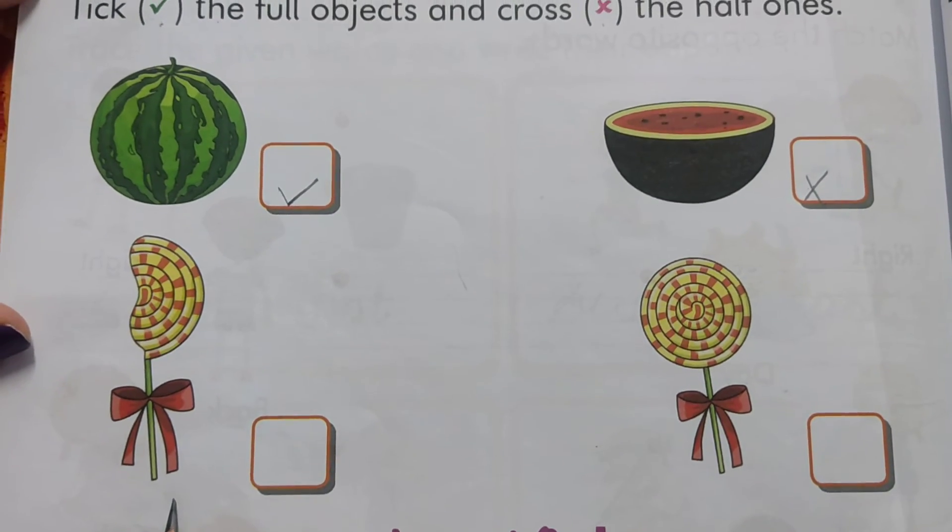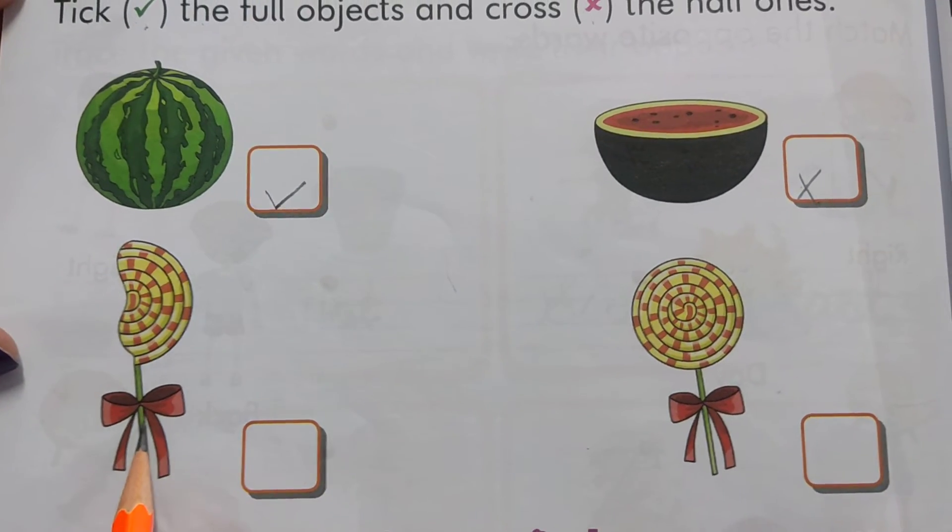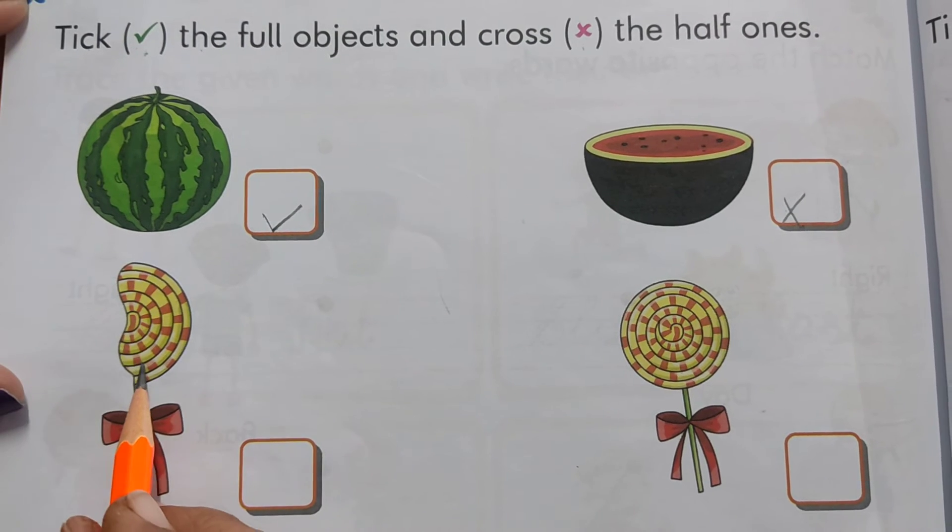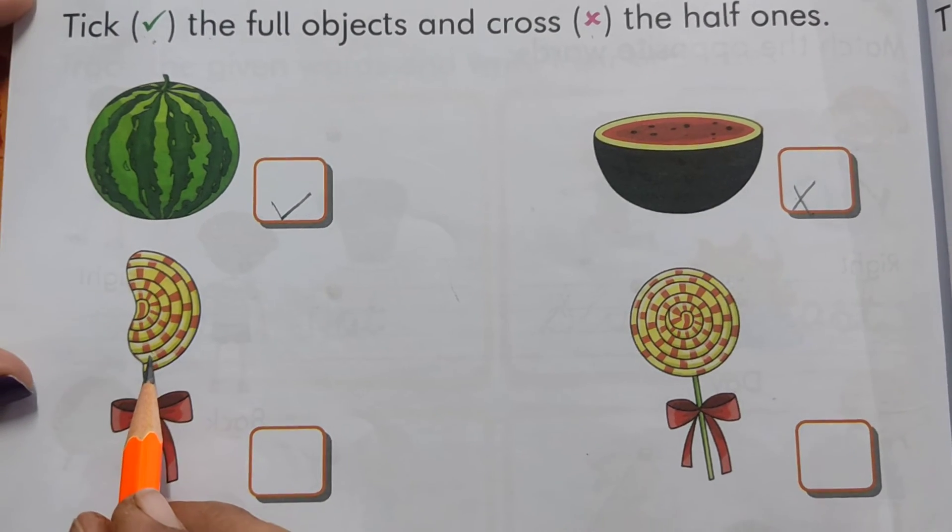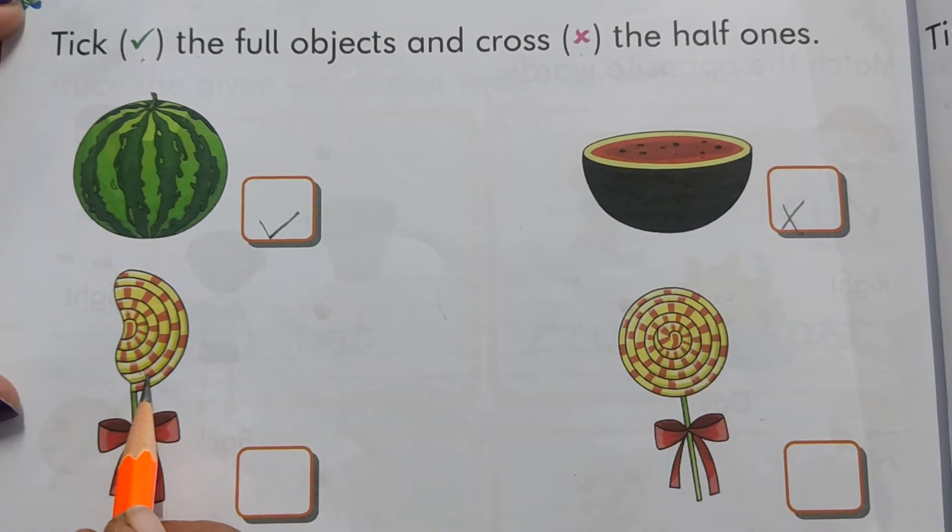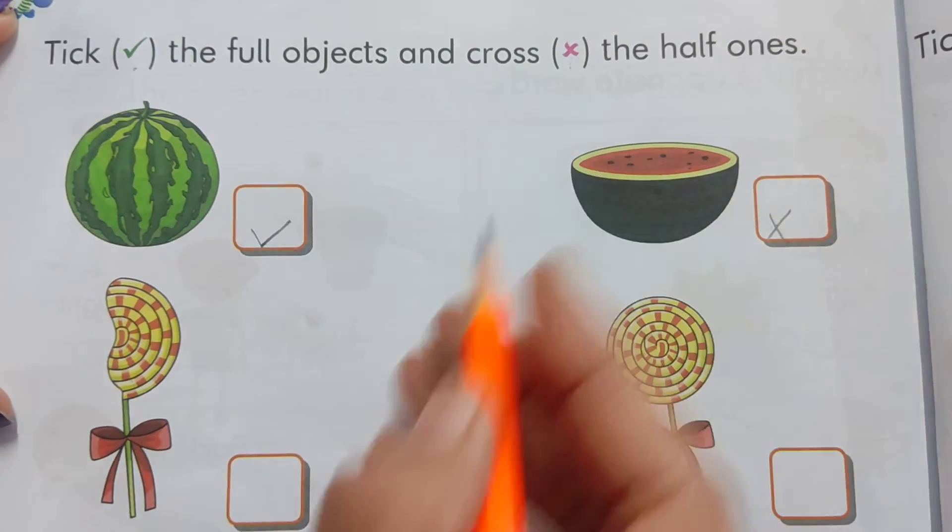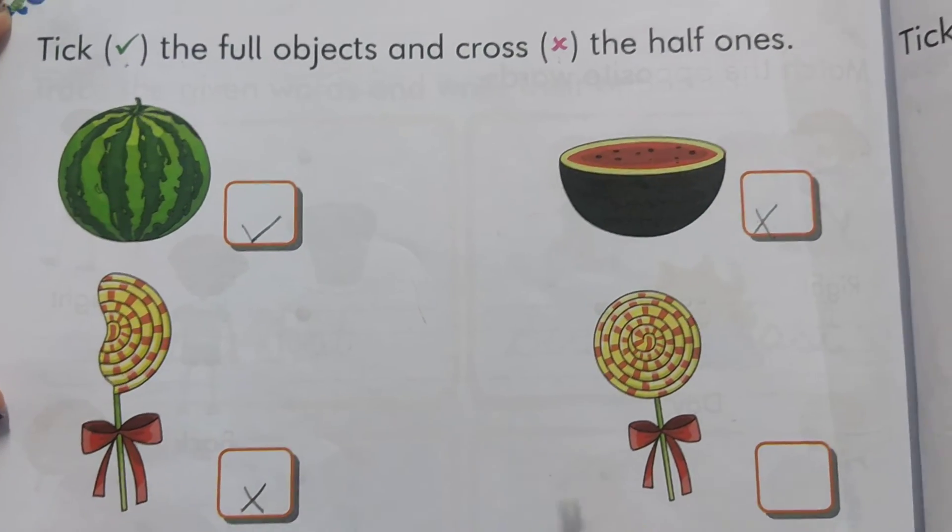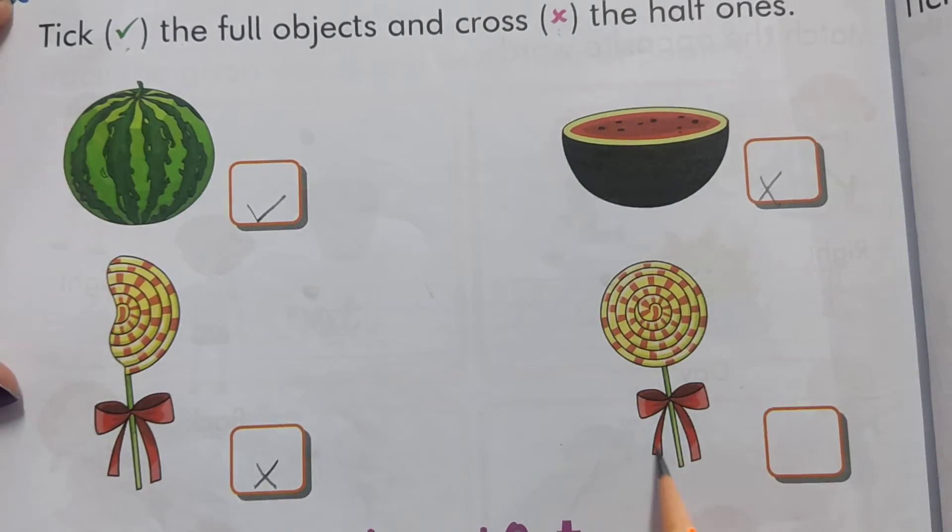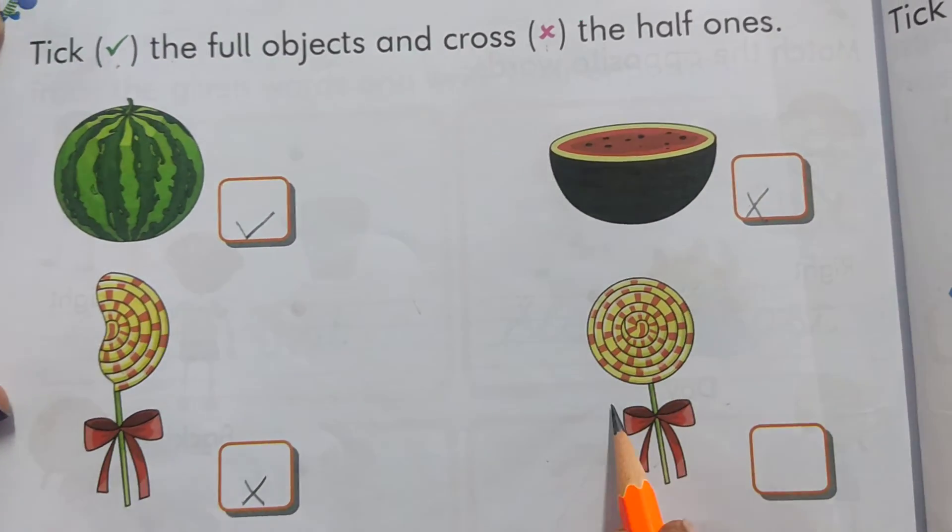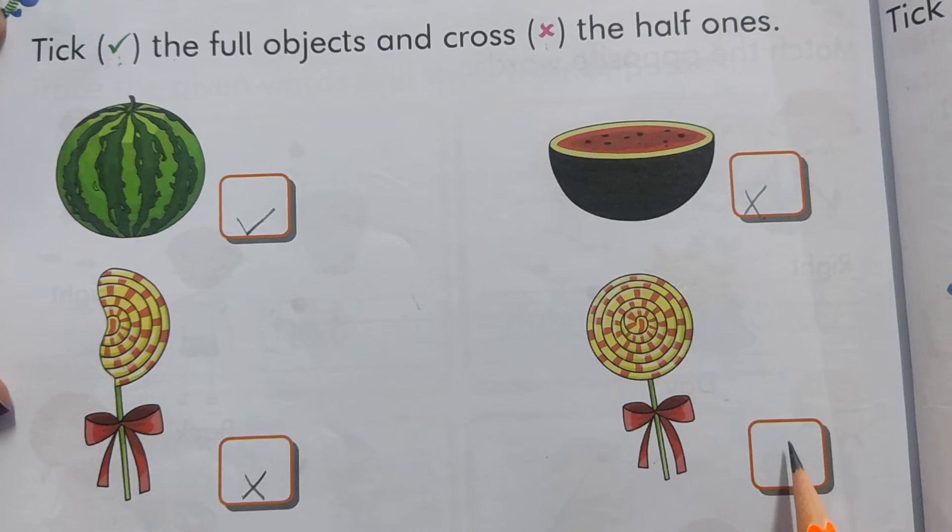Now kids, this is the picture of a candy. But ye full hai, ya half hai? Ye full hai? No. This is half. Yes. So we will put the cross sign. Again, this is the picture of a candy. And it is full. So we will put a tick over here.